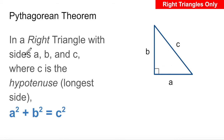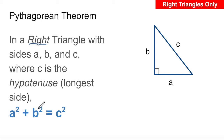Now, the Pythagorean Theorem states that in a right triangle — and it's important to note that this only applies to right triangles; never attempt to apply the Pythagorean Theorem to a non-right triangle — in a right triangle with sides a, b, and c, where c is the hypotenuse or the longest side, a squared plus b squared equals c squared.